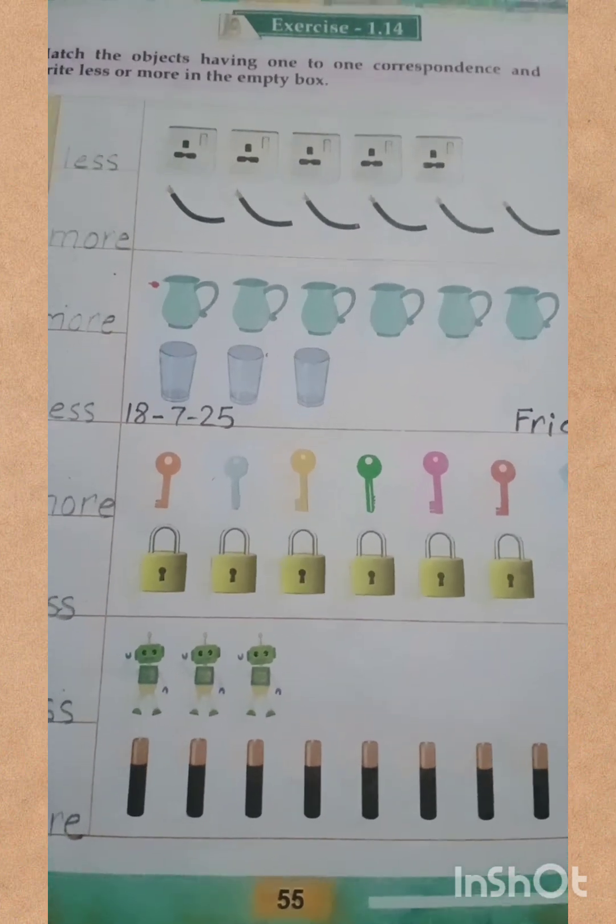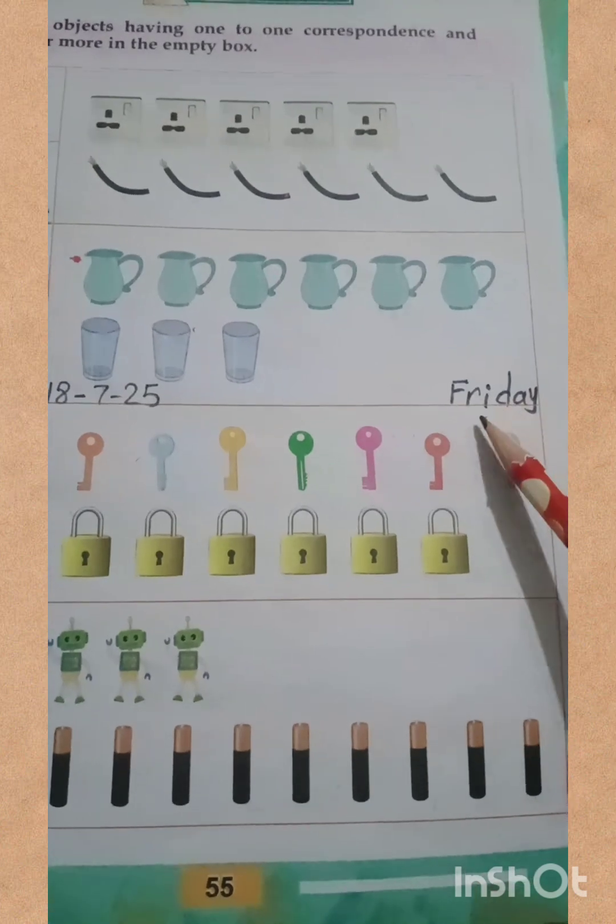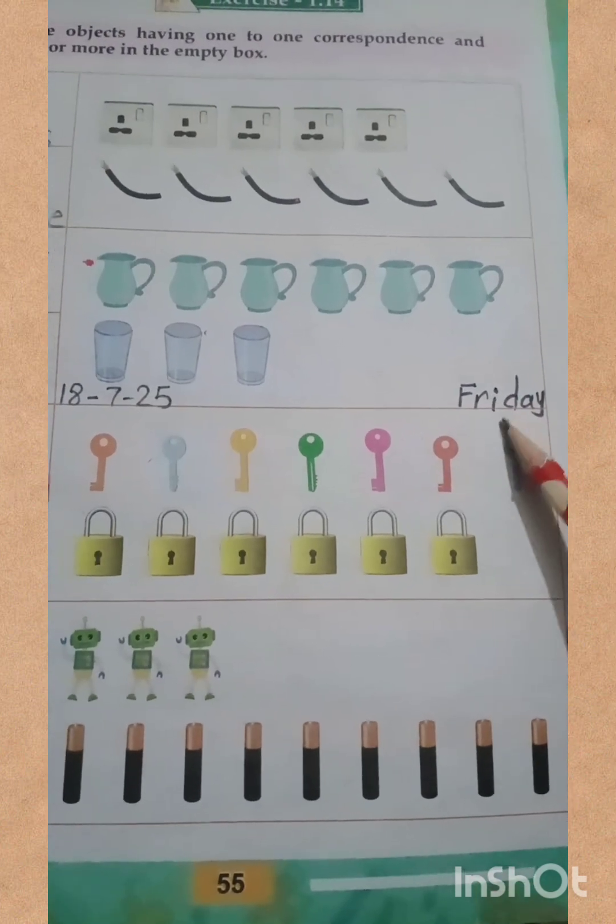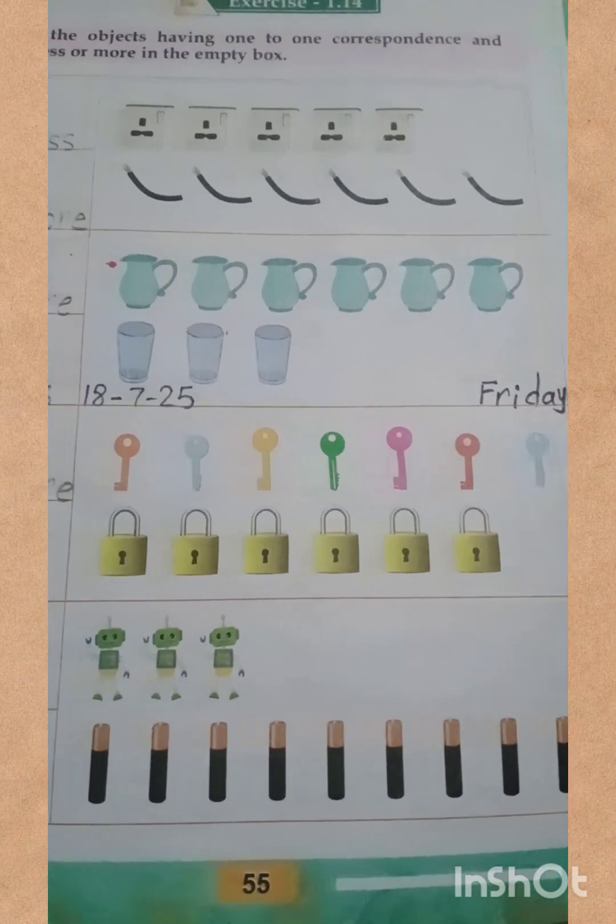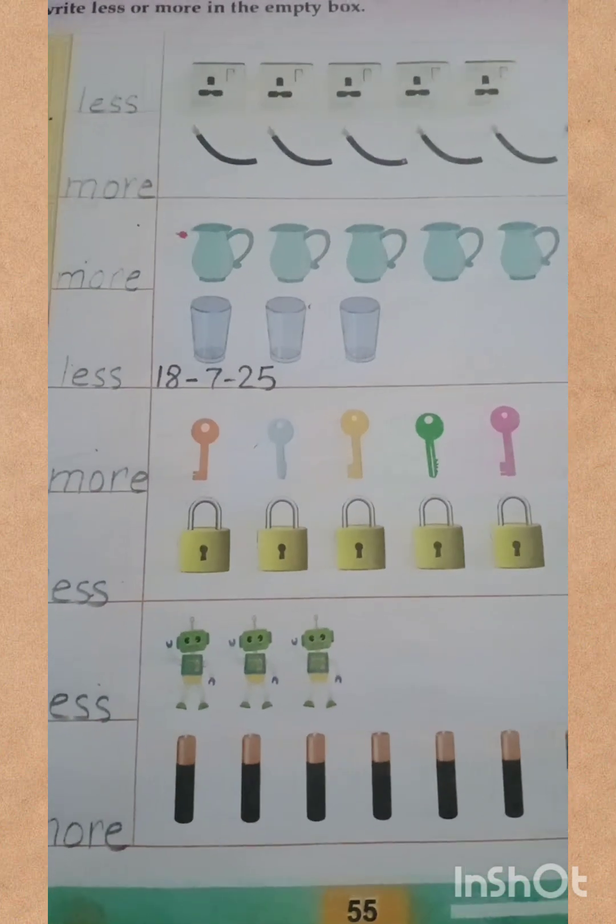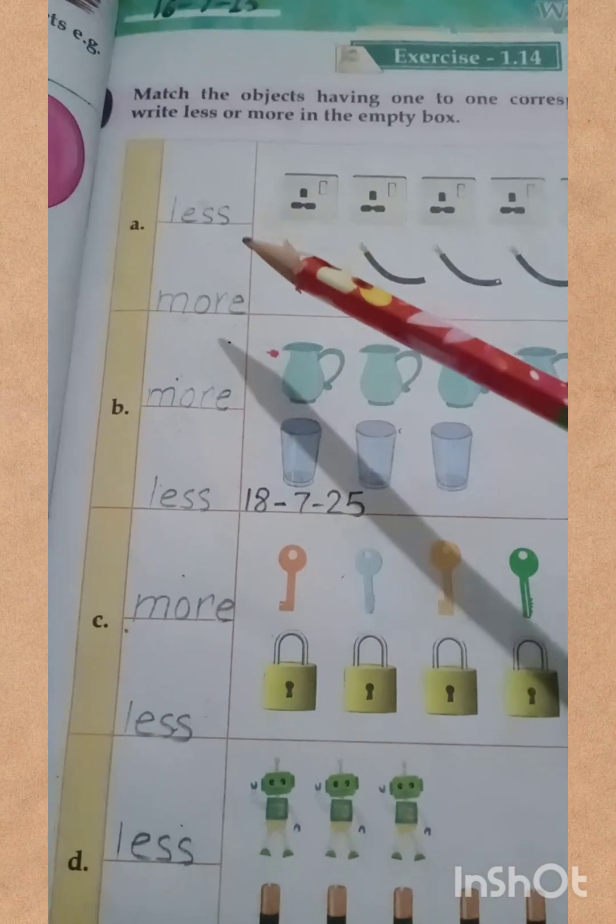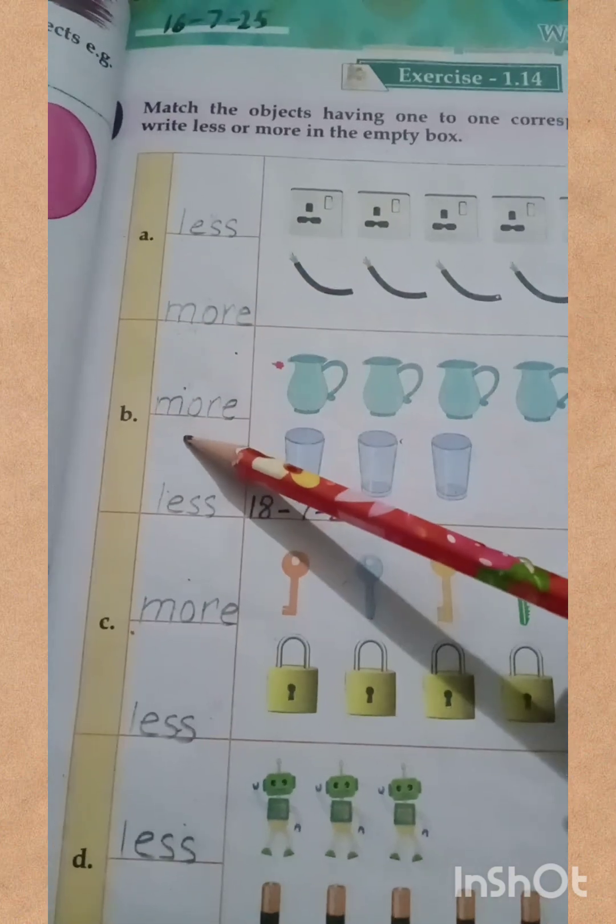First of all, I am telling you about date and day, then we will start the work. Today is Friday, and the date is 18 July 2025. We did question number A and B in the previous work.